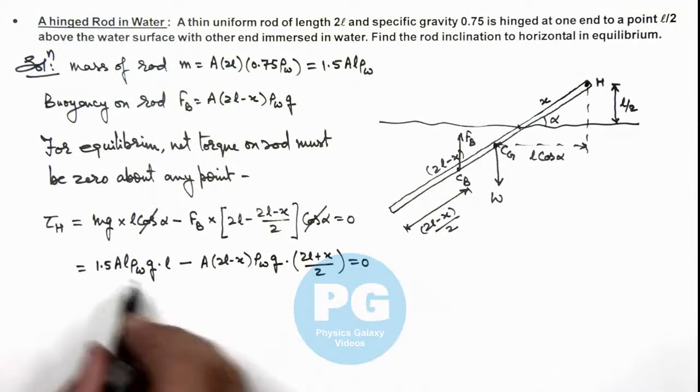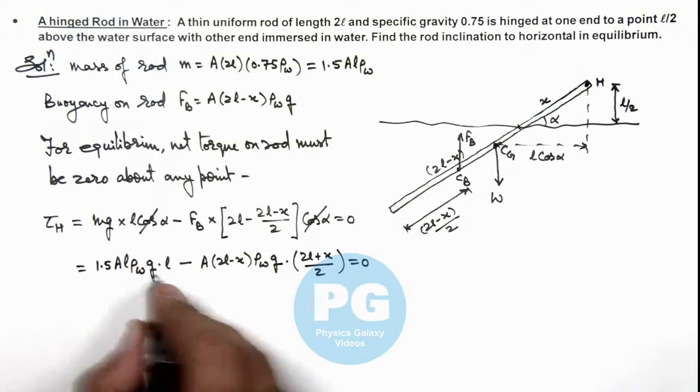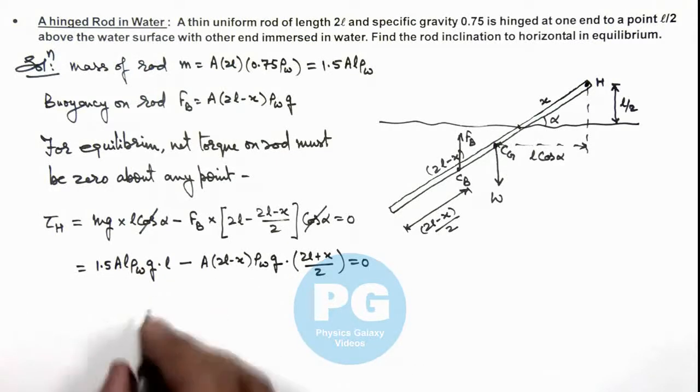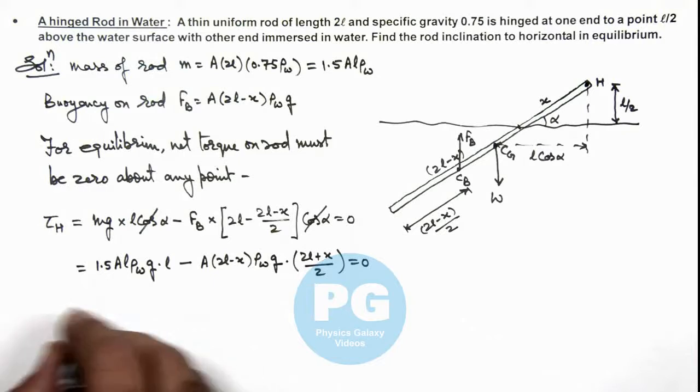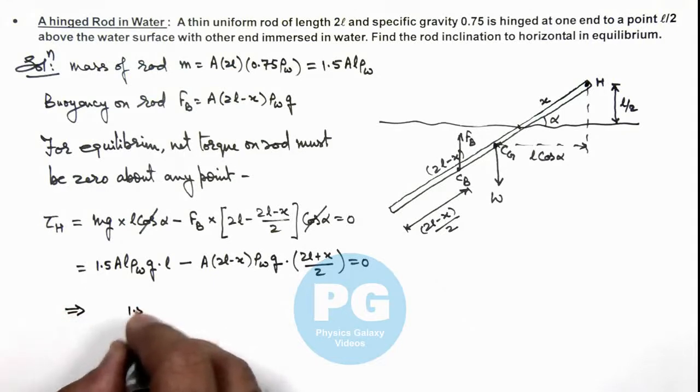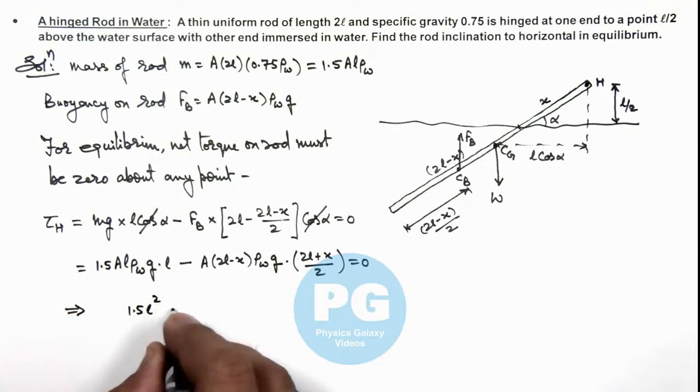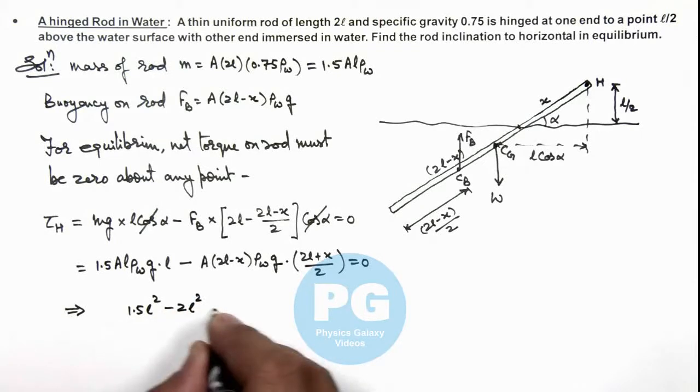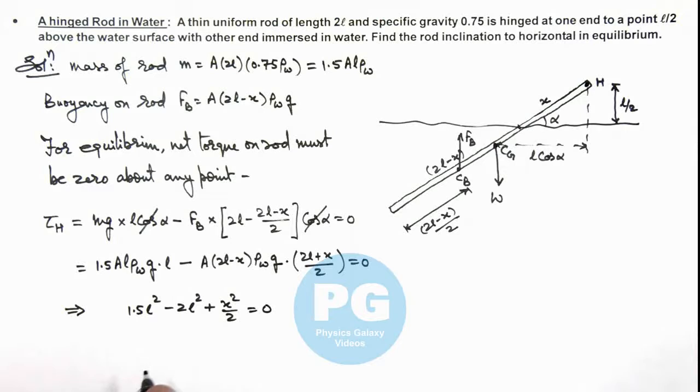So this is giving us 1.5 l² minus 2l² plus x²/2 is equal to 0. So this is giving us x²/2 is equal to l²/2, which implies the value of x is equal to l.